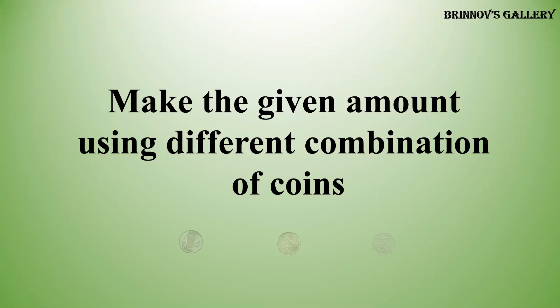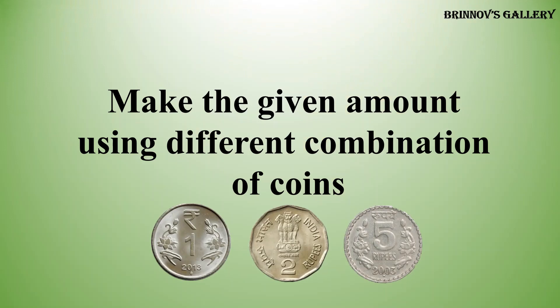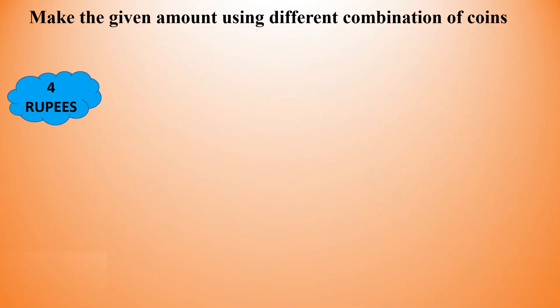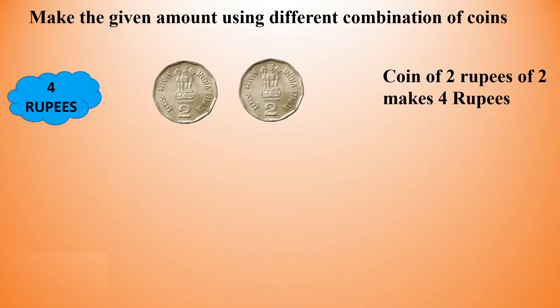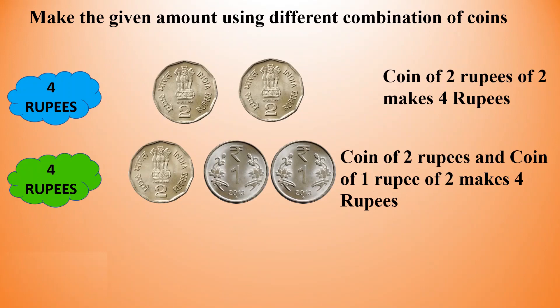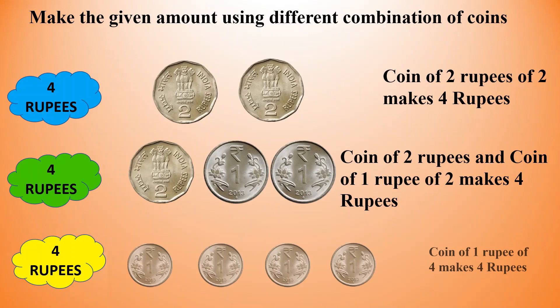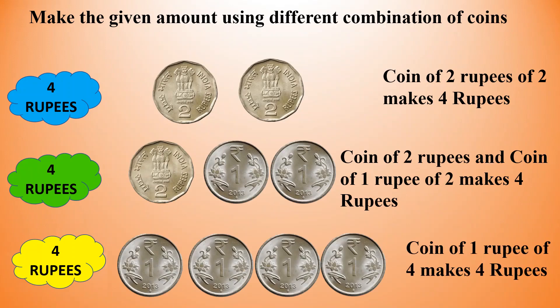4 Rupees — make the given amount using different combinations of coins. Coin of 2 Rupees, two of them, makes 4 Rupees. Coin of 2 Rupees and coin of 1 Rupee, two of them, makes 4 Rupees. Coin of 1 Rupee, four of them, makes 4 Rupees.